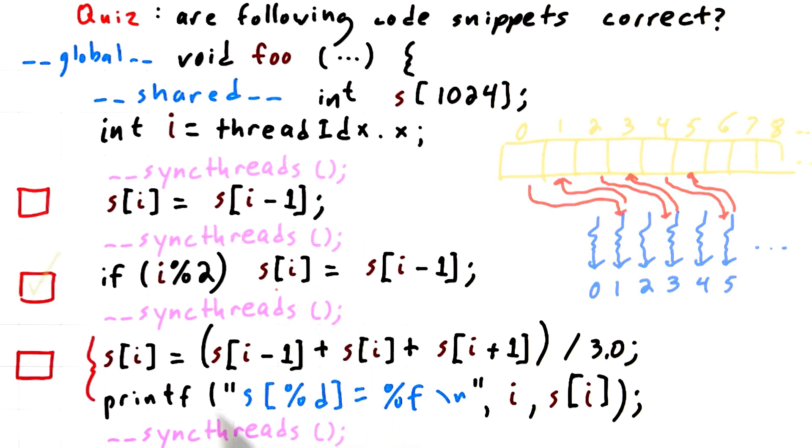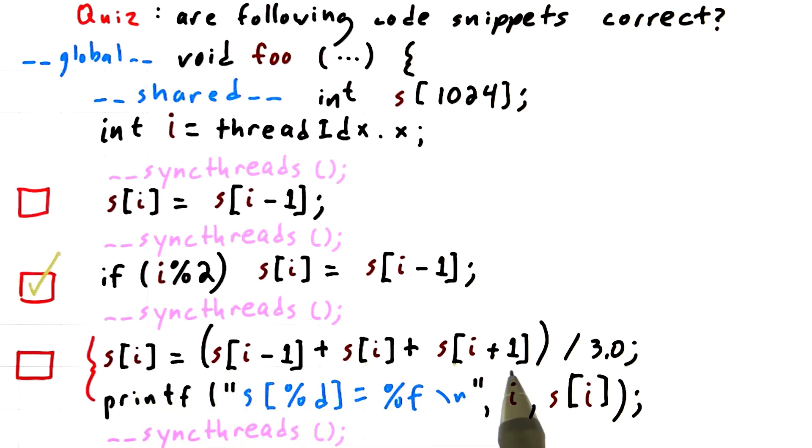And our final example is again not correct. It's similar to the first one. Every thread is going to read from locations i minus 1, i, and i plus 1. It's going to do a little math, and it's going to store the result in location i.